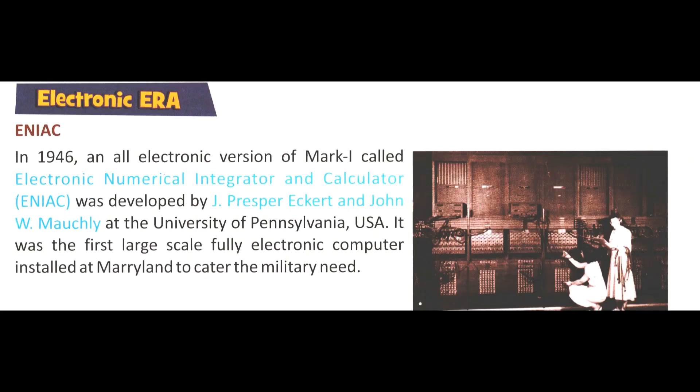Now we are going to discuss the electronic era of computer development. In 1946, an electronic version was developed by J. Presper Eckert and John W. Mauchly at the University of Pennsylvania, USA, which was further known as ENIAC. The full form of ENIAC is Electronic Numerical Integrator and Calculator.